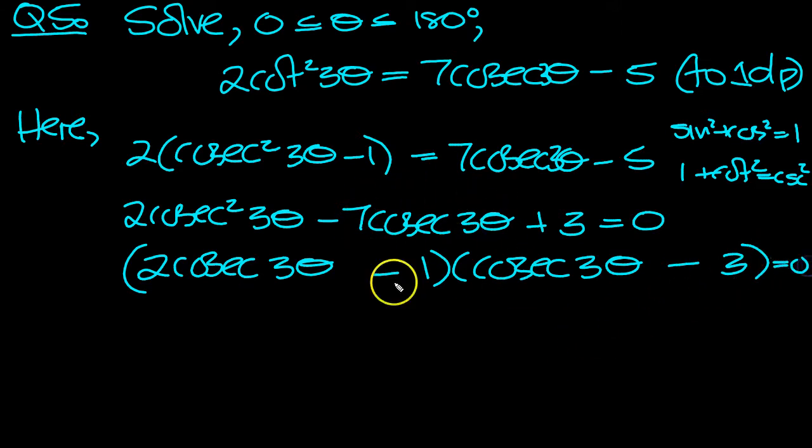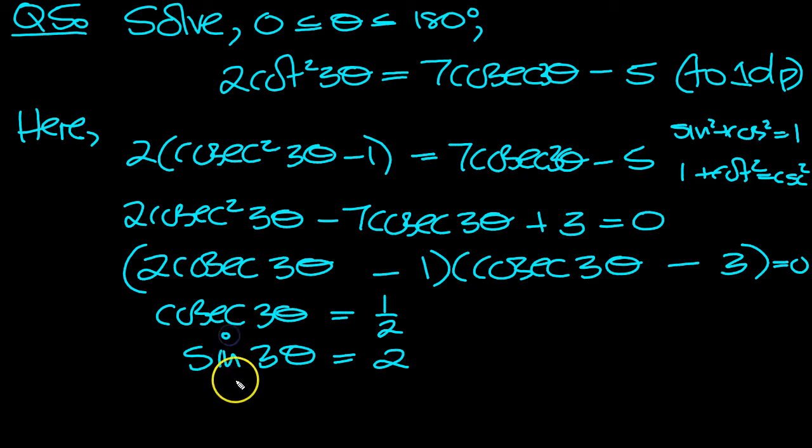So this one says that cosec 3 theta equals 1 half. Cosec is 1 over sine, so invert the fraction and write sine 3 theta is 2. No solutions for this. And this one is cosec equals 3, so that would be sine 3 theta equals 1 third. When we invert cosec 3 theta equals 3, this is what we need to solve.